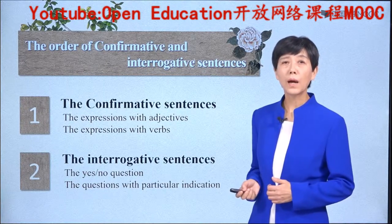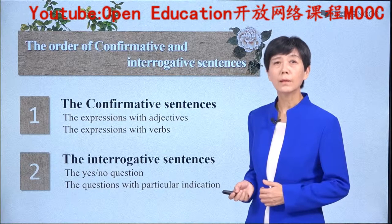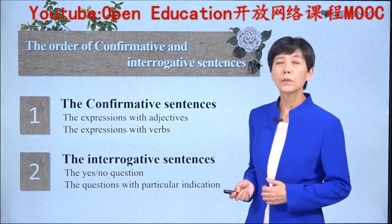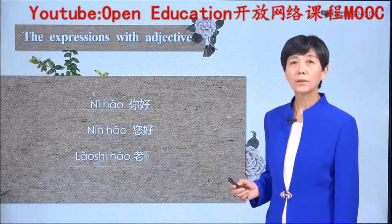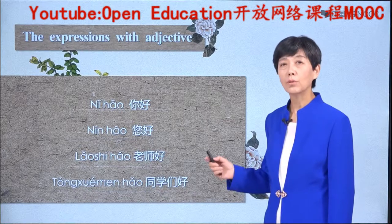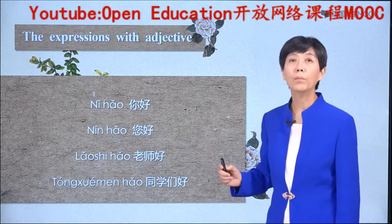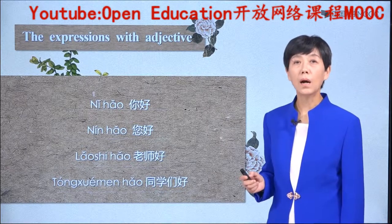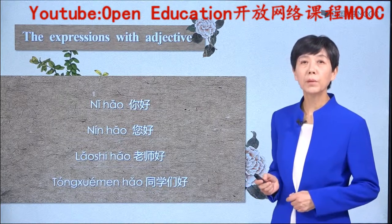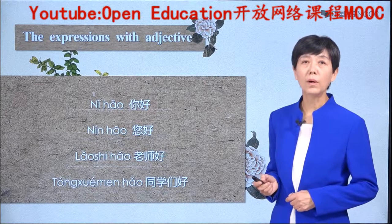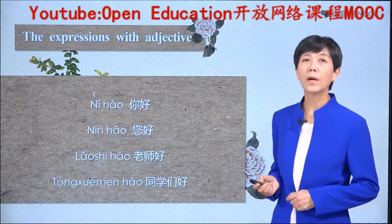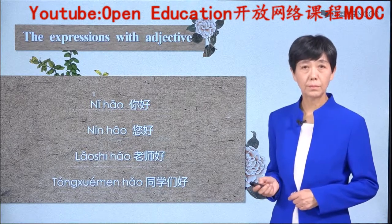Good! There are two kinds of typical structures in Chinese. One of them uses adjectives, and the other uses verbs. Let's take a look at these sentences: 你好、您好、老师好、同学们好. Here, 你好 means 'hello' or 'how are you?' 您好 is for greeting people in a polite way.